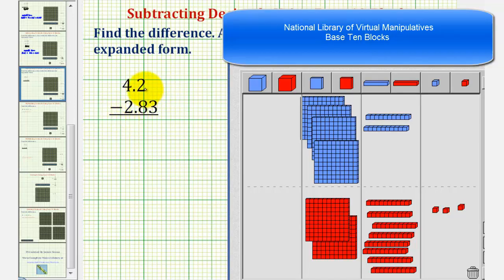So for 4.2, we have four flats for four ones and two longs for two tenths. Because we're subtracting, we'll represent 2.83 using red base ten blocks.